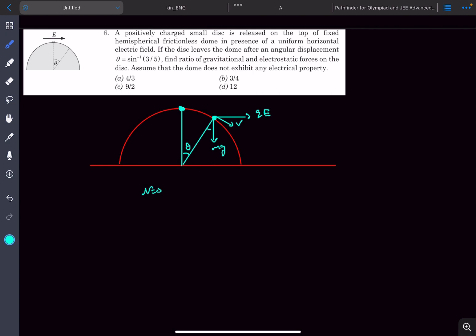So now we can write the net inward force as mg cos theta minus QE sin theta. This would be equal to the centripetal force, which would be mv squared divided by r. So this would be our equation number one.